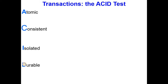So we say that transactions are what we call ACID. ACID stands for four properties: they are atomic, consistent, isolated, and durable. Let's look at what that means.